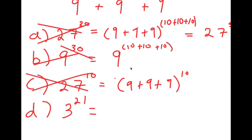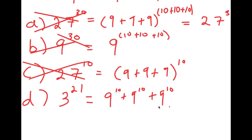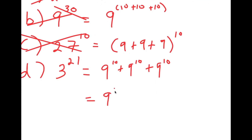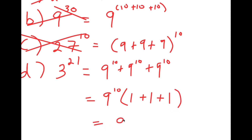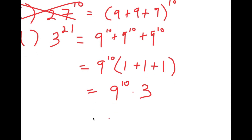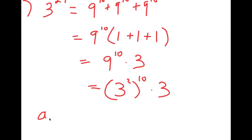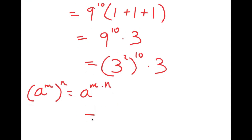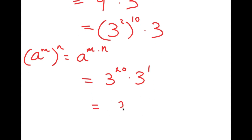By process of elimination, the right answer is D: 3 to the power of 21. Here's how: starting with 9 to the power of 10 plus 9 to the power of 10 plus 9 to the power of 10, I factor out 9 to the power of 10, giving 9 to the power of 10 times (1 plus 1 plus 1), which equals 9 to the power of 10 times 3. This is equal to 3 squared to the power of 10 times 3. Using the rule a to the power of m to the power of n equals a to the power of m times n, I get 3 to the power of 20, times 3 to the power of 1. Adding the exponents gives 3 to the power of 21.